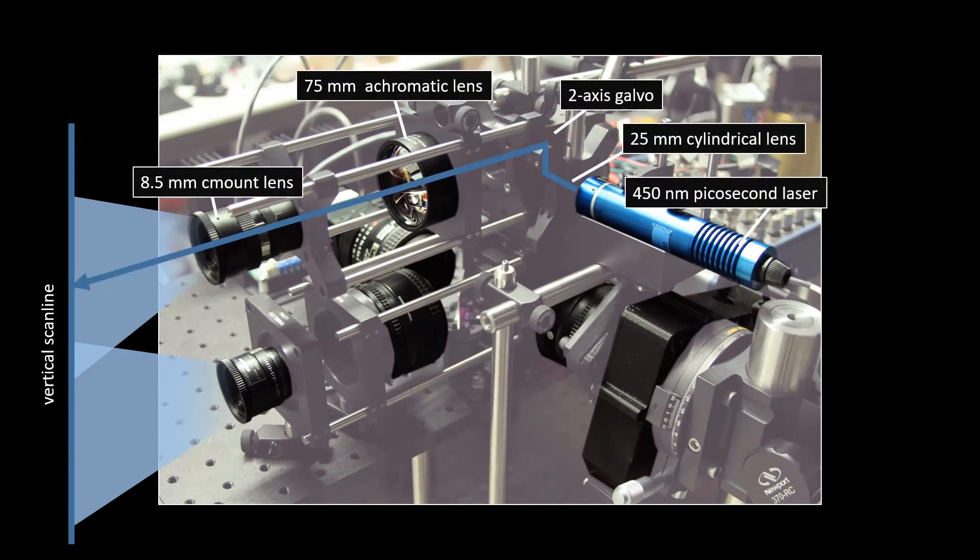The illumination optics consist of a pulsed picosecond laser, a cylindrical lens to distribute light along a line, and additional optics that determine the size of the scanline. A galvo mirror controls the lateral position of this line within the scene.